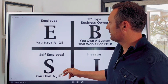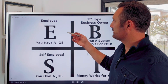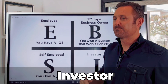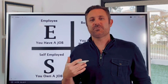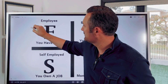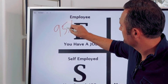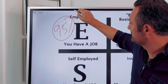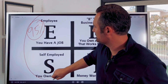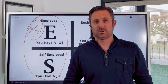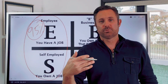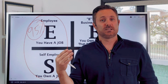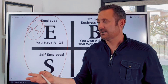This is the cash flow model and the cash flow quadrants for employee, self-employed, business, or investor. 95% of the population sits in one of these two quadrants. If you're an employee working for somebody else, you're trading time for money. You obviously get a Friday paycheck.